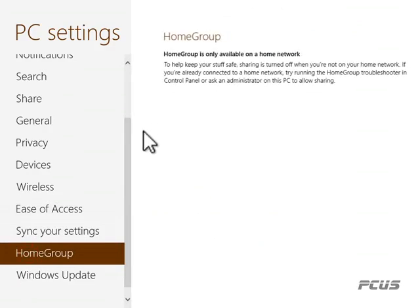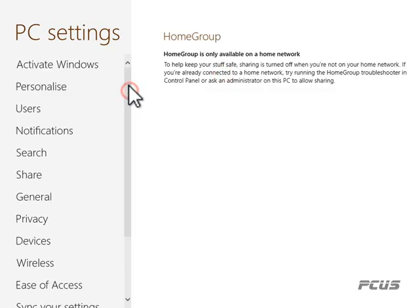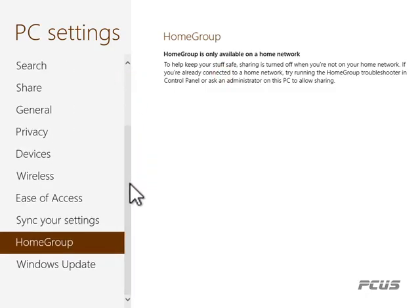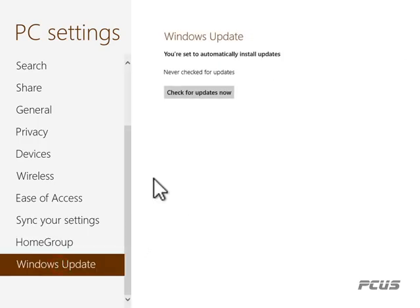HomeGroup has to do with a home network — a very safe local network. You connect PC to PC and do network sharing. This is not fully covered in this tutorial, but we may browse through it later.